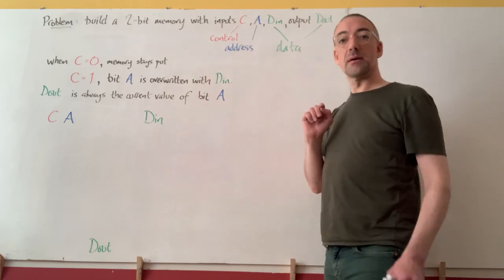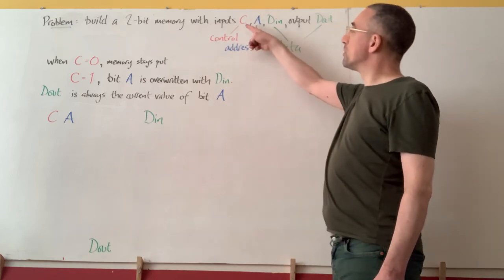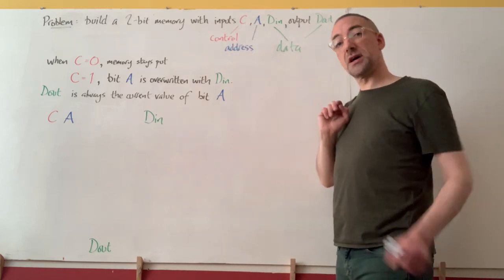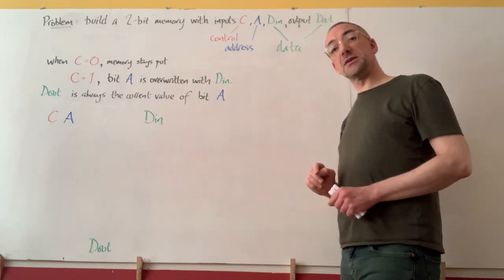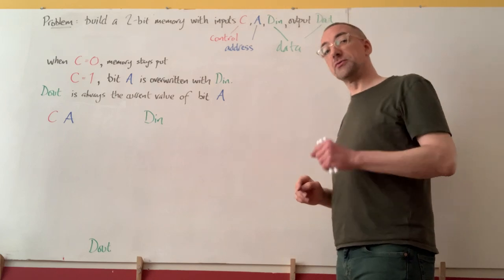We can build a two-bit memory with inputs C for control, that's going to tell us whether to read or write memory. A for address, that's going to tell us where in memory to read or write.